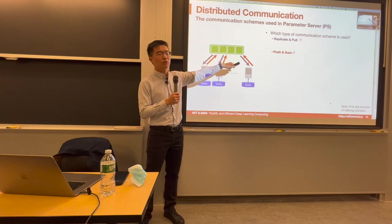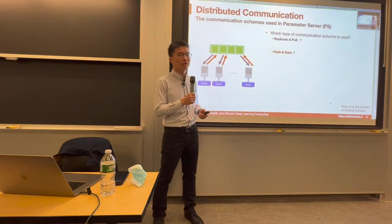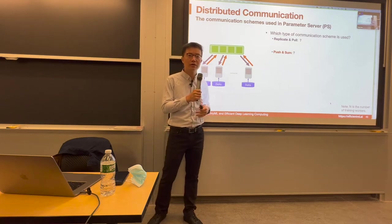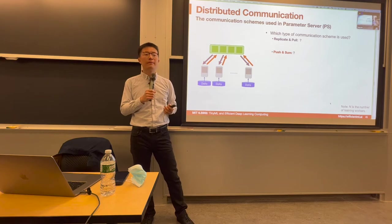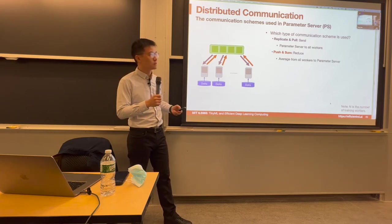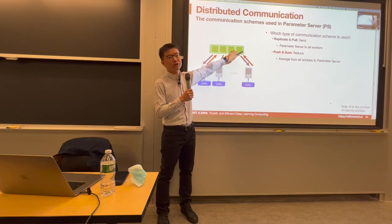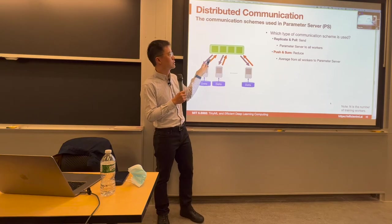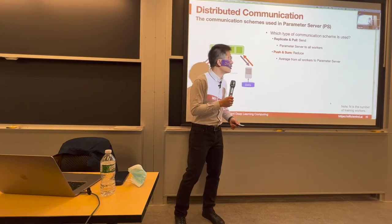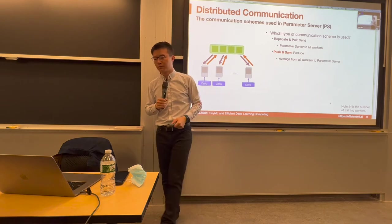What communication primitives are used in the parameter server setup? For pulling weights — the server sends the same model to different workers, so we use the send primitive. For pushing and summing gradients, we use the reduce operation to average from all workers to the parameter server.